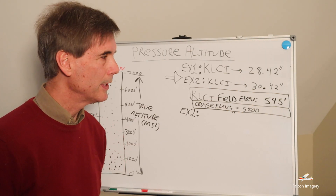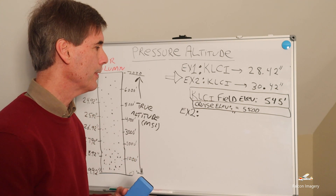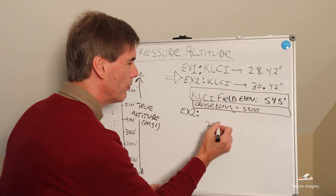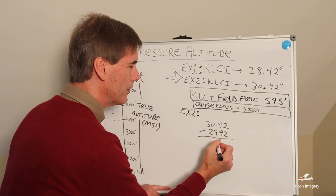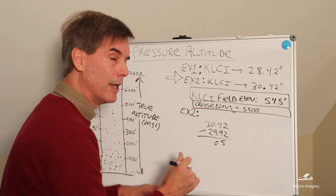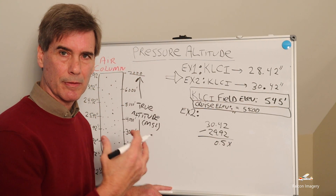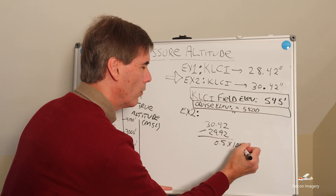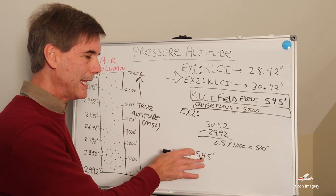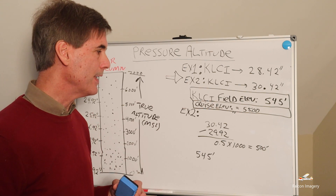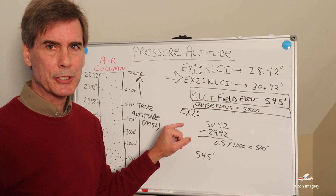Now for example two. We get an AWOS report from Laconia Airport saying 30.42 inches of mercury. We take 30.42 and subtract from it the standard pressure of 29.92, and we come up with 0.5. Multiplying times 1,000 — because you lose one inch of mercury for every 1,000 feet — we determine 500 feet. Now we need to determine whether to add or subtract from the field elevation of 545 feet. We've got 30.42 inches of mercury — that's a higher pressure than standard pressure.